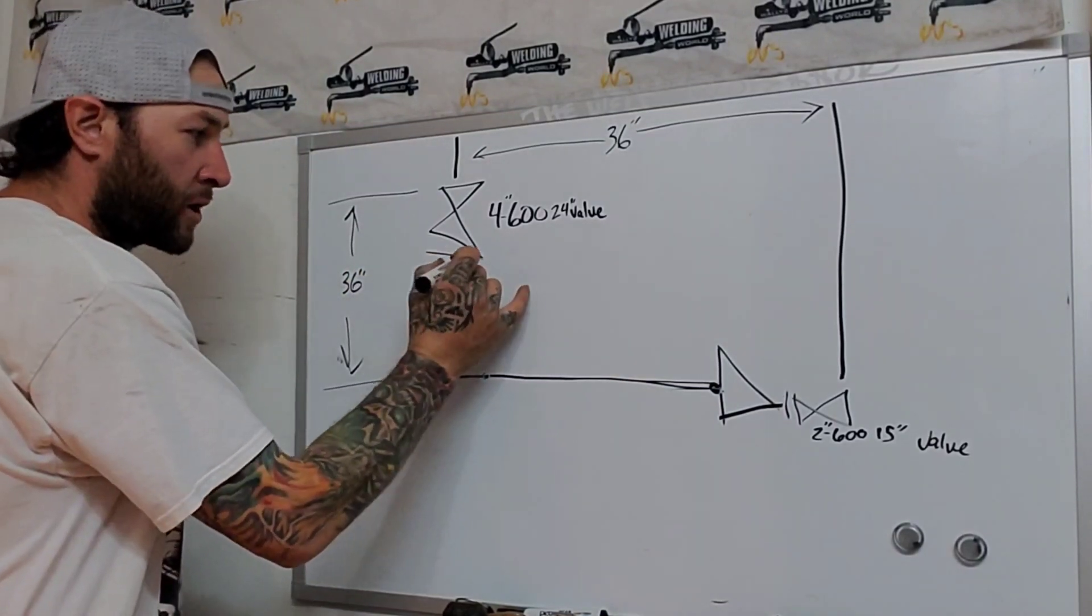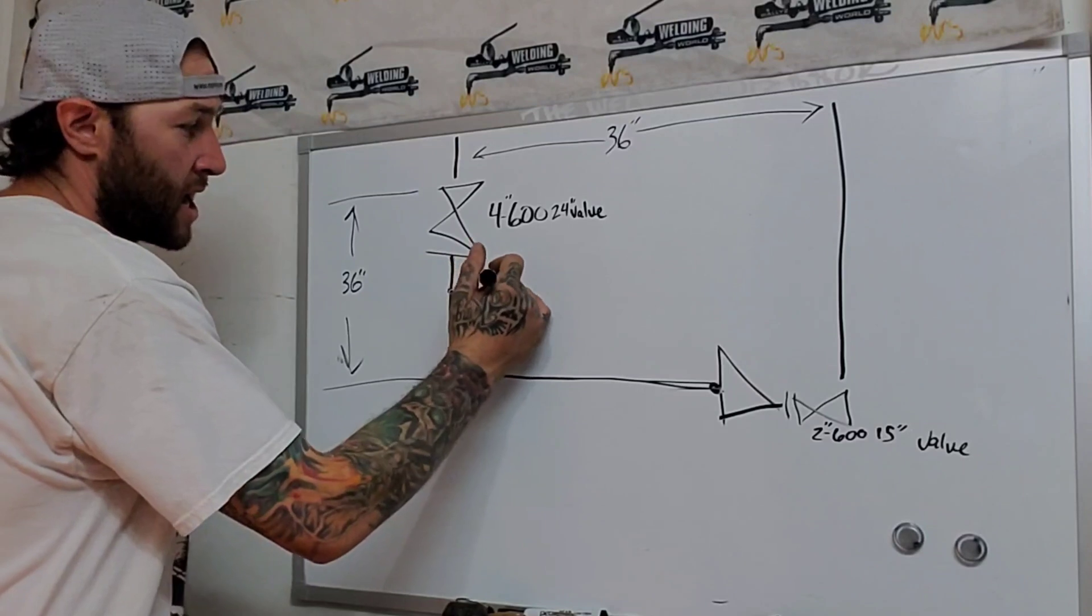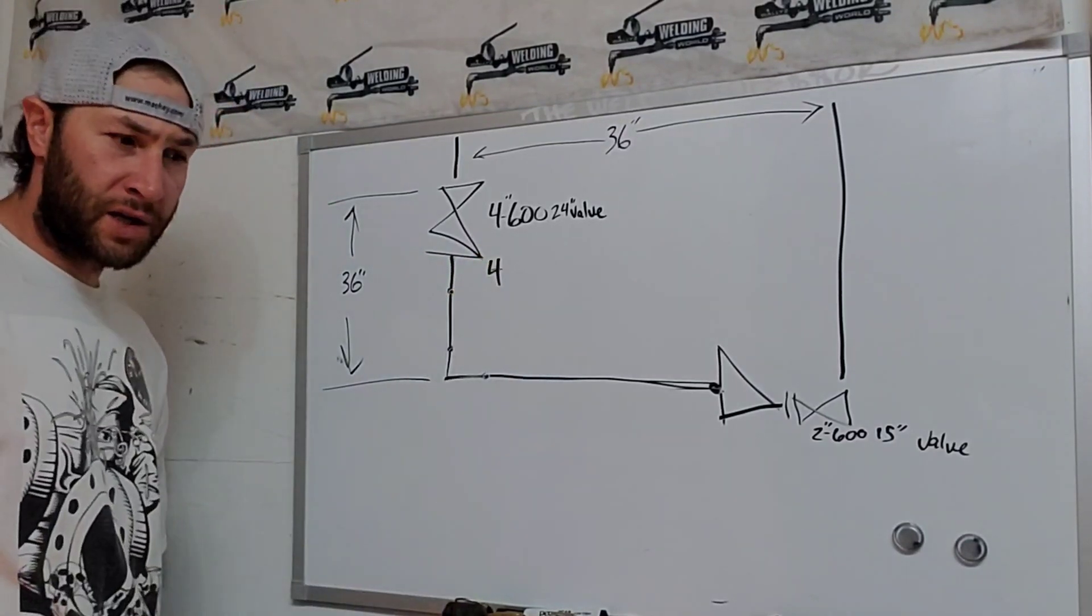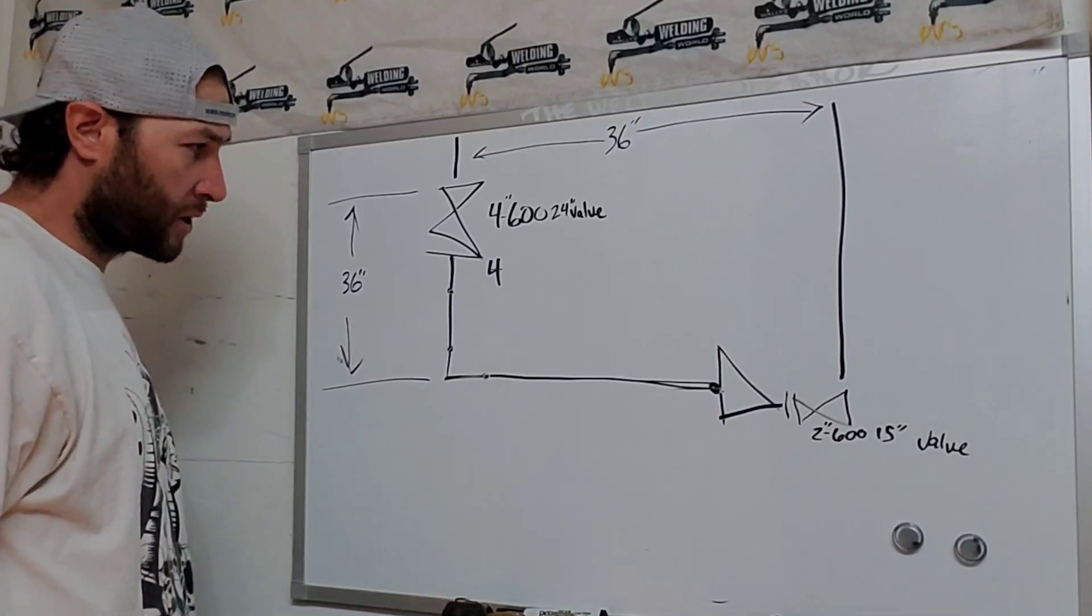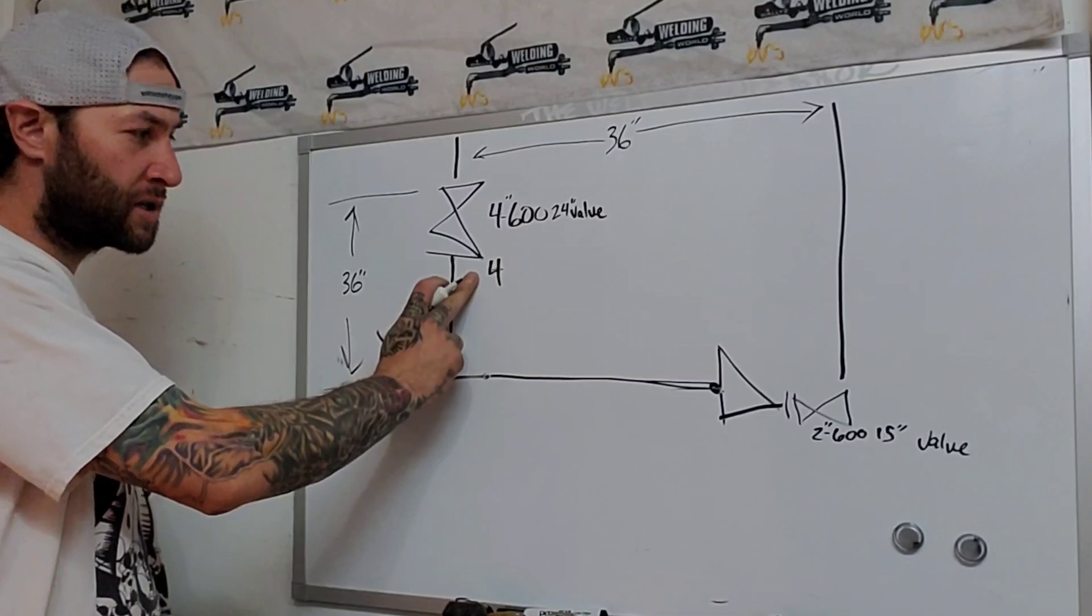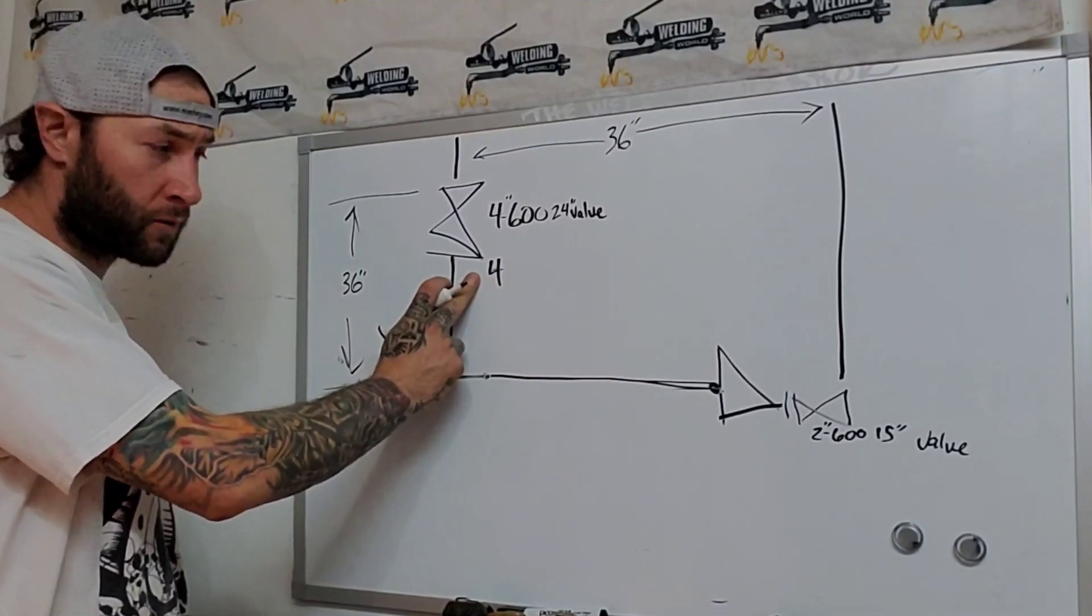So then let's say we've got a 4-inch, 600-pound flange right here, and I'm pretty sure the book calls out for 4 inches, I believe it is, the 4-inch. I could be wrong, but when it comes to a 600-pound series, it leaves out the 1/4-inch race face.